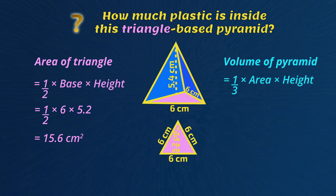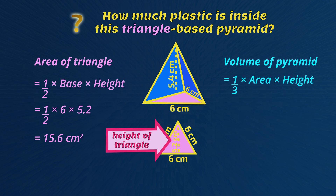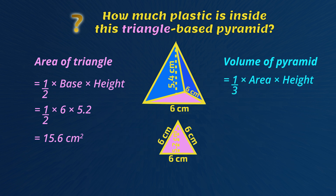Now for the volume of this pyramid. The rule is one-third times by the area of the triangle times by the perpendicular height straight up inside the pyramid. But be careful with the heights — the height of the triangle is 5.2 centimeters, but the height of the pyramid is 5.4 centimeters. So with the volume: one-third times by the area of the triangle, which is 15.6, times by the height of the pyramid, which is 5.4. The volume of plastic in this die is 28.08 cubic centimeters.